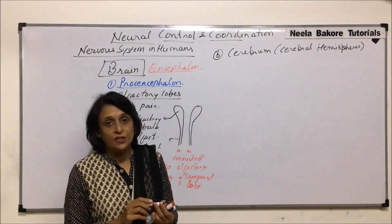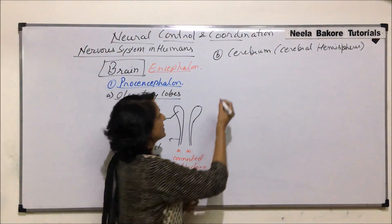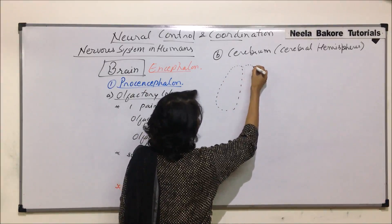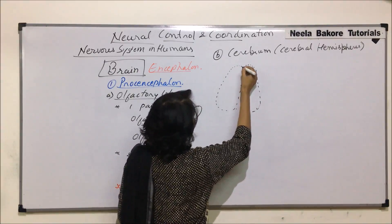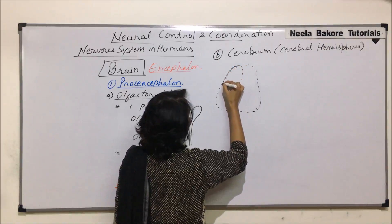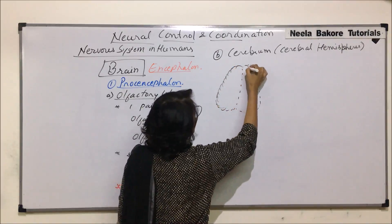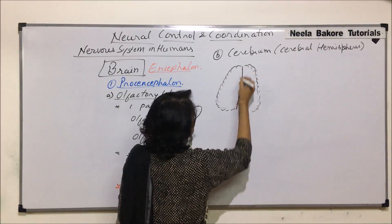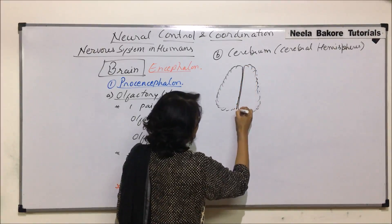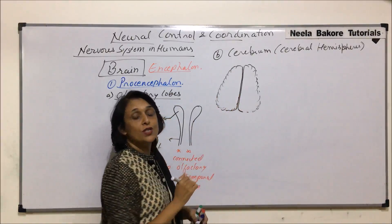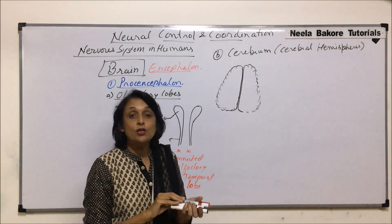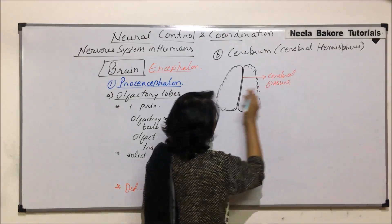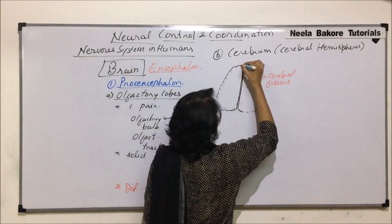These two halves are connected to each other. If we draw the brain seen from the dorsal side, one half is visible and there is a deep longitudinal fissure which separates these two parts. These are the two cerebral hemispheres separated by a longitudinal fissure known as the cerebral fissure.